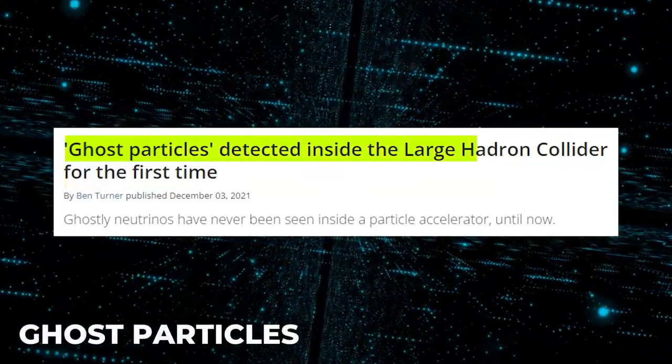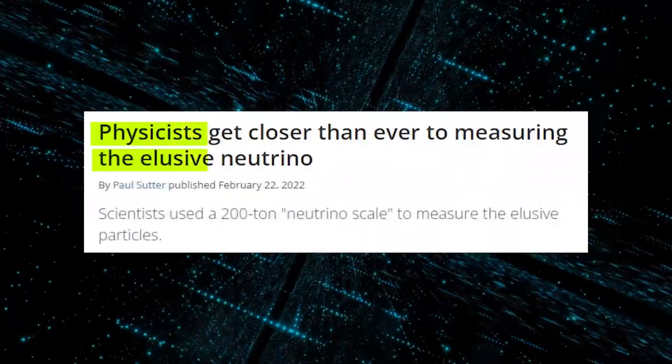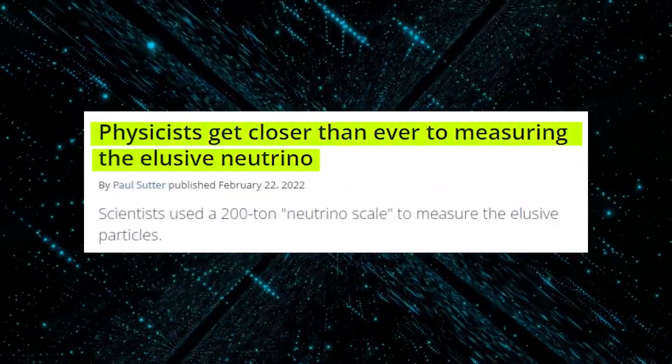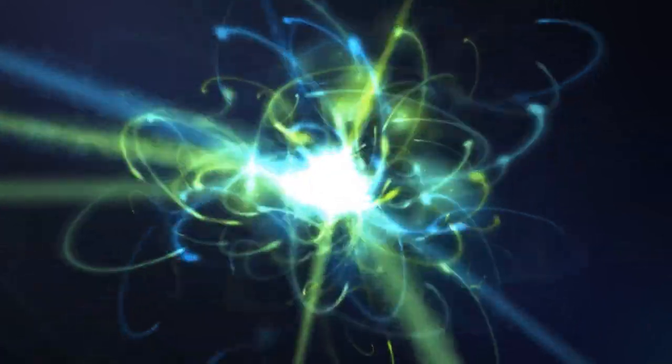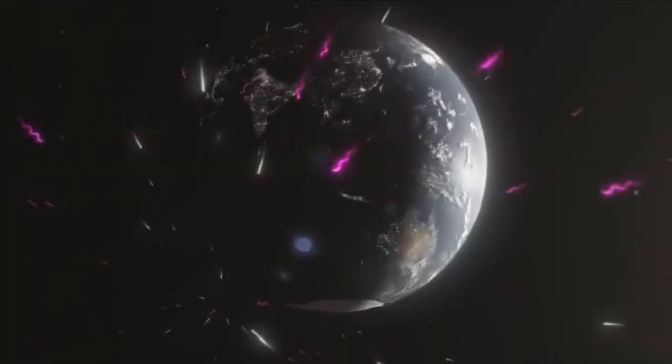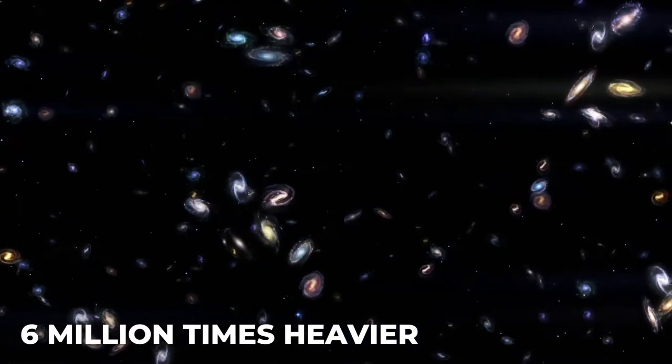For the first time, ghost particles have been found by physicists inside an atom smasher. News of the discovery caused a sensation since neutrinos are infamously elusive. The discovery gives researchers studying subatomic particles an entirely new avenue to explore. Each square centimeter of your body experiences around 100 billion neutrinos when you view this video.